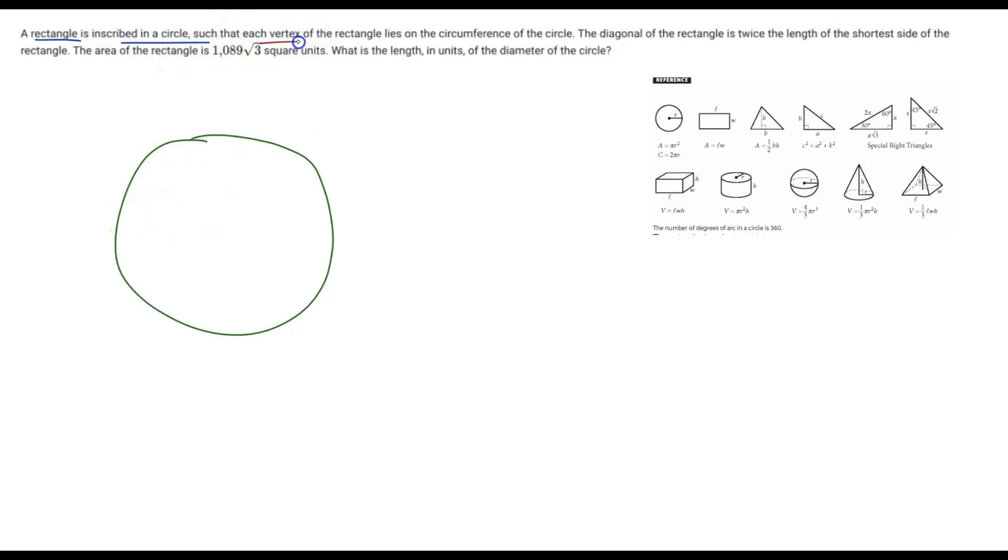So the rectangle is drawn such that the vertex or each corner of the rectangle lies on the circumference of the circle. So what it's going to look like is one corner goes there, and then the corners of that rectangle are going to be on the circumference or the outside of that circle. So there's our drawing.